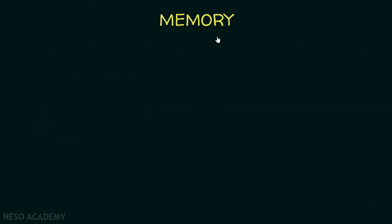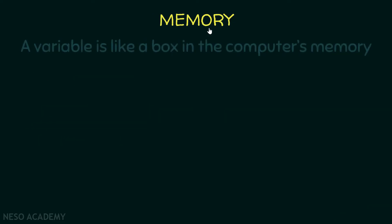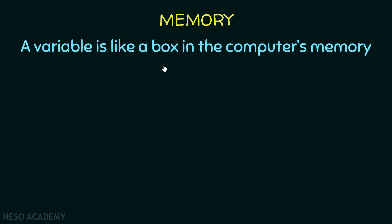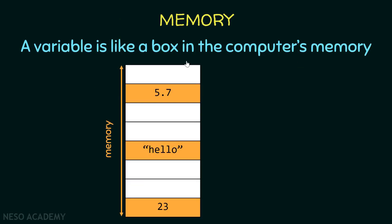Now let's have a look at the computer's memory. You can imagine that a variable is like a box in the computer's memory. Consider that this table is the memory of our computer — it is divided into boxes. In one box we have the number 5.7, here we have a string, and here we have the number 23. So these three boxes are variables — containers in our memory where we can store some data.